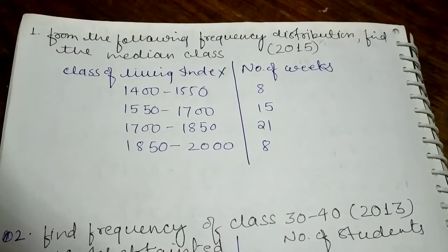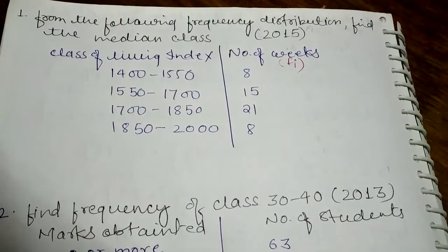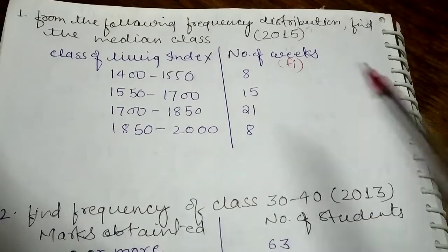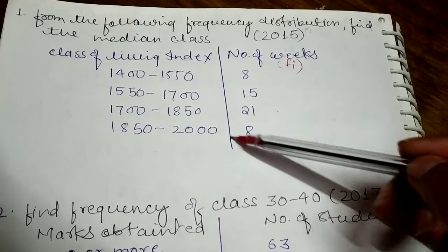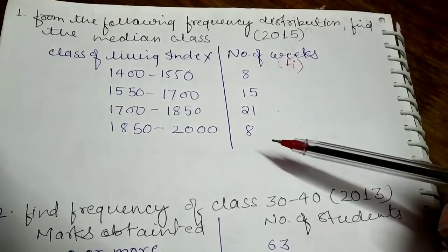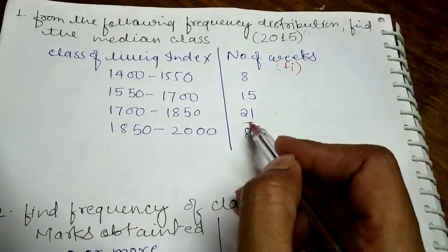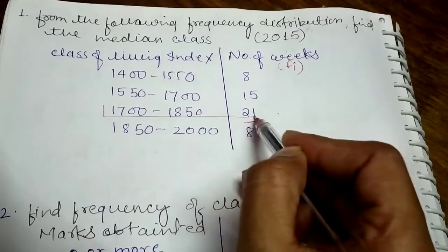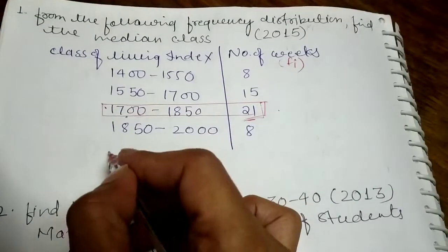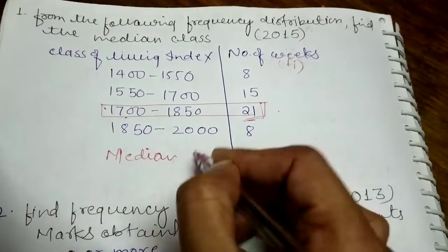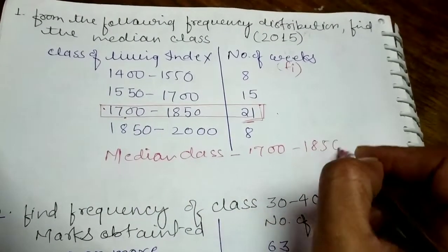The first question is: from the following frequency distribution, find the median class. We are given a table with classes and frequency (Fi). The highest frequency in Fi is 21. From this, we can tell that the median class will be from 1700 to 1850.